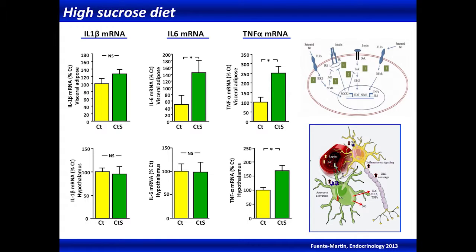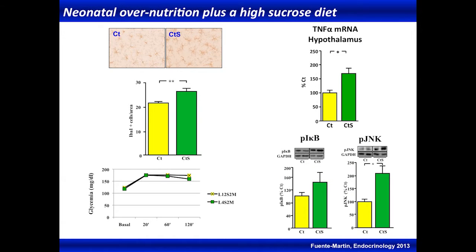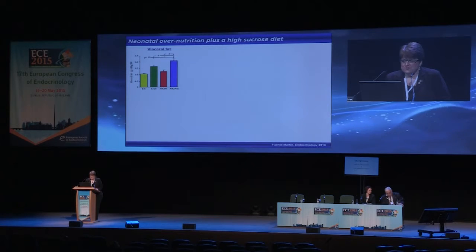What happens with the glia and intercellular signaling pathways? We have an increase in the number of microglia — a gliosis — and activation of typical inflammatory pathways. However, we don't see any change in their glucose tolerance test at this point, so we couldn't really call them insulin or glucose intolerant. But the story is not so simple: even sucrose would activate microglia and cause hypothalamic inflammation.